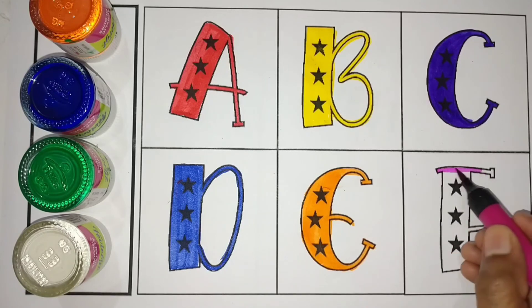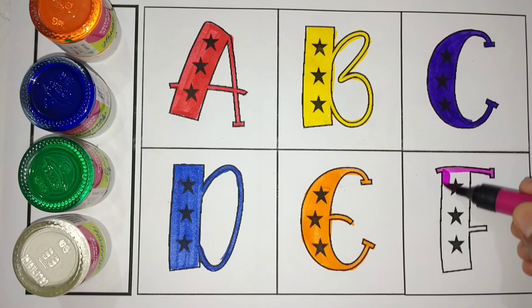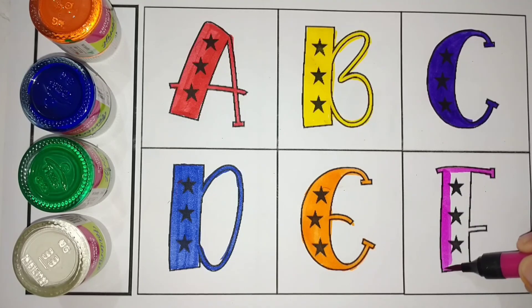Pink color, F, F for Fish. F, F for Fish. Fish means Machili.